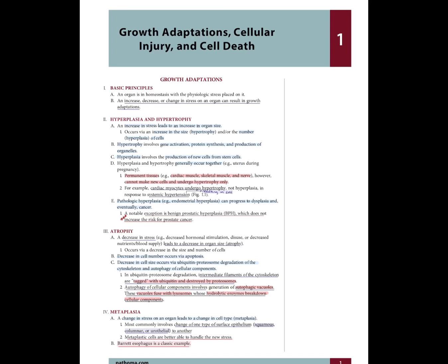Hi guys, today we're going to be reading Pathoma Chapter 1: Growth Adaptations, Cellular Injury, and Cell Death. Basic Principles: An organ is in homeostasis with the physiologic stress placed on it. An increase, decrease, or change in stress in an organ can result in growth adaptations.